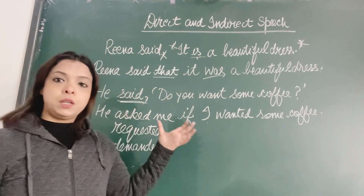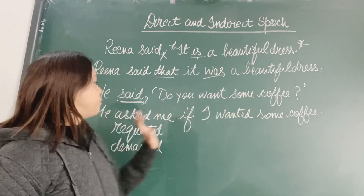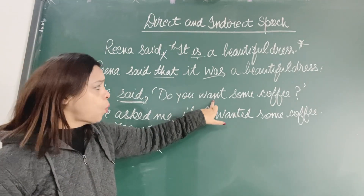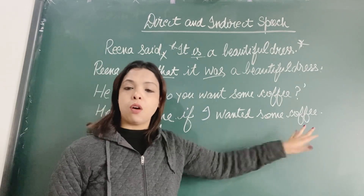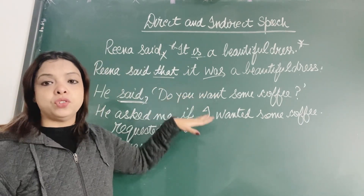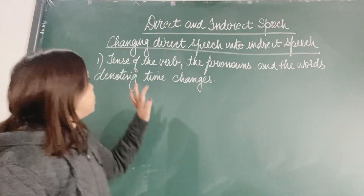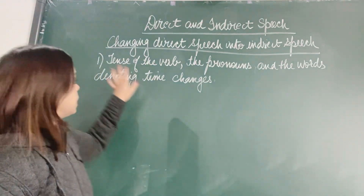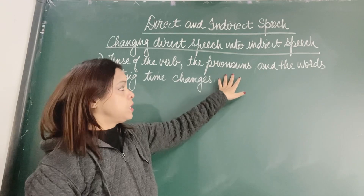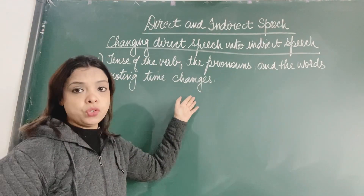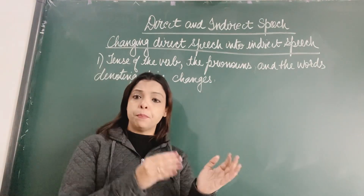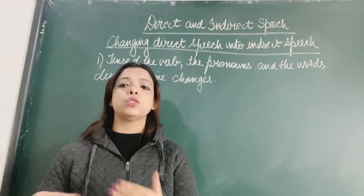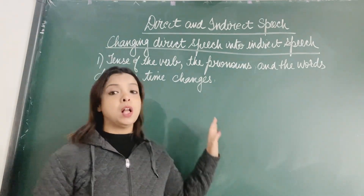Don't get confused. He said, 'Do you want some coffee?' becomes: he asked me if I wanted some coffee. 'You' becomes 'I,' 'want' becomes 'wanted.' We see that the interrogative sentence changes into an assertive sentence. So the first thing to keep in mind when changing direct to indirect speech is the tense of the verb. Simple present changes to simple past, simple past changes to past perfect, and so on. I will give you a table that will make it clear.